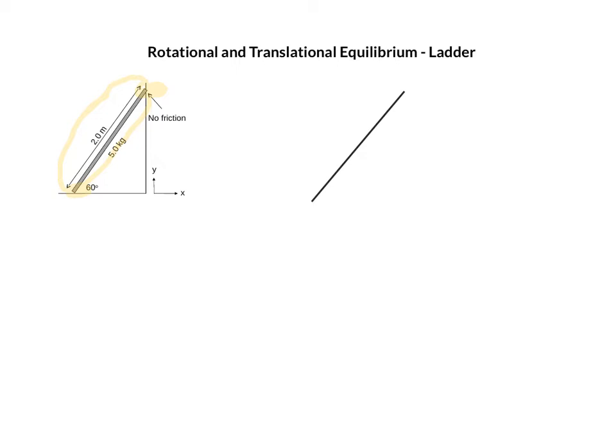So from the wall we get a normal force from the wall and that should go straight away from the surface so to the left. So we have force from the wall, then from the floor we have a vertical force which is actually just a normal force so I'm going to call it vertical force.